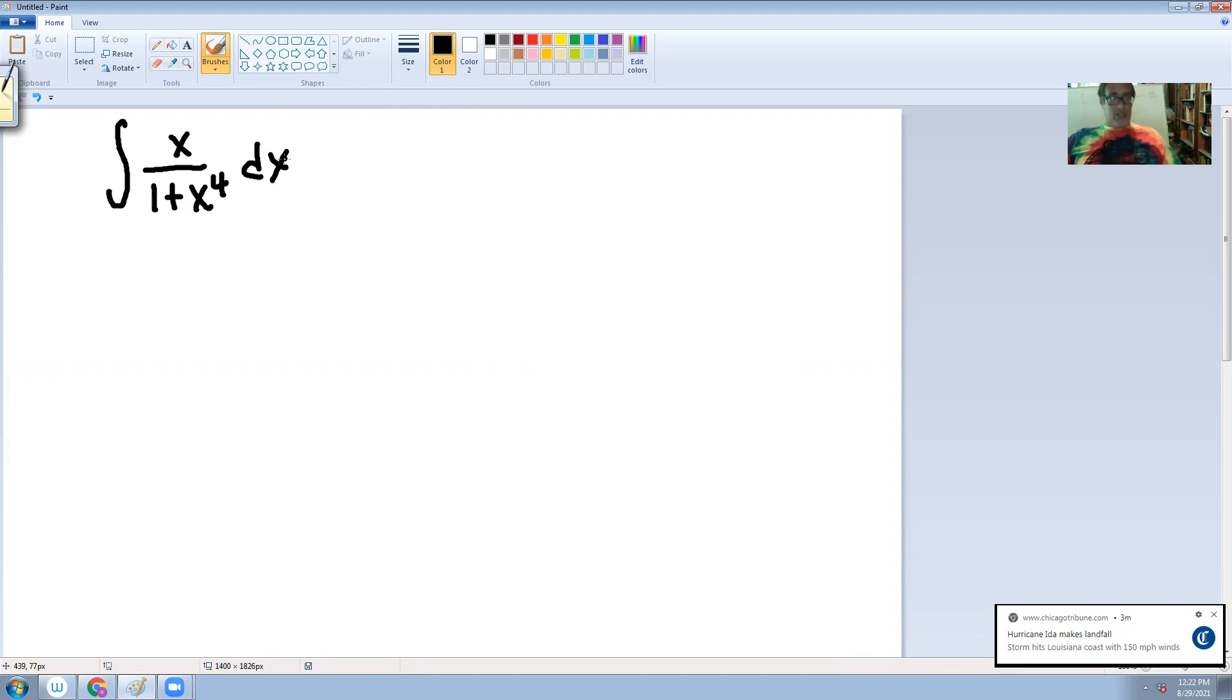Now, one of the things you notice is that if you try to let u equal the denominator, that doesn't work, right? You see why? Because the derivative of the denominator is 4x cubed. But here's what else you can try with this.